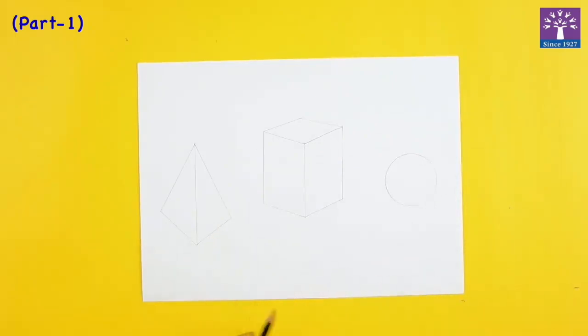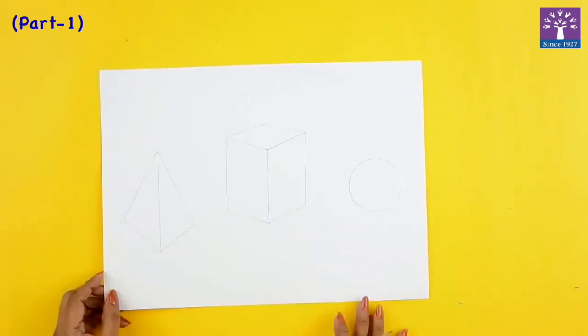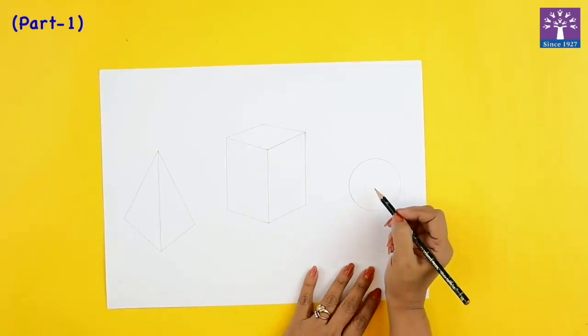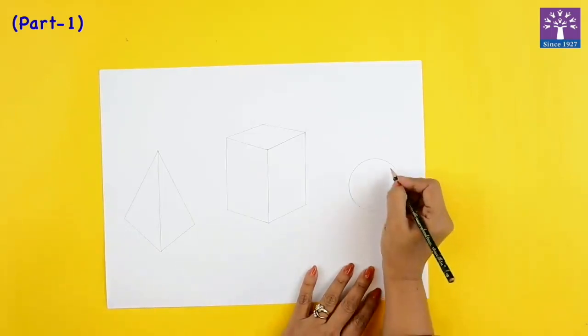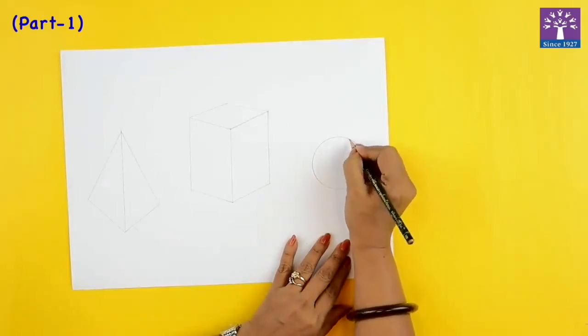Now basically here we are also going to learn how to color these geometrical shapes such that the dimension is being seen. Now for this sphere I'll give you one small idea. We'll just draw one small circle inside. Just keep on drawing small circles very lightly.